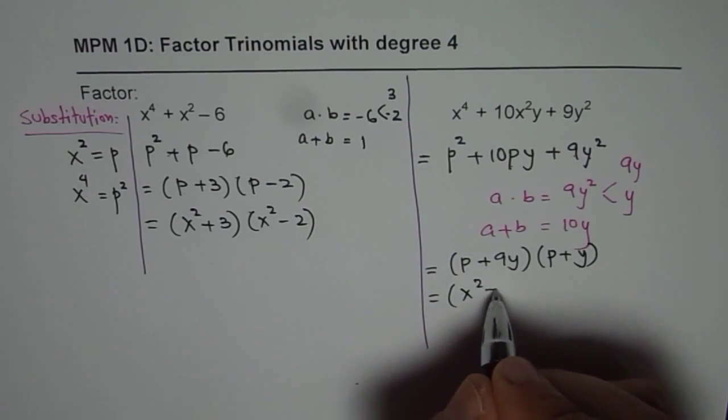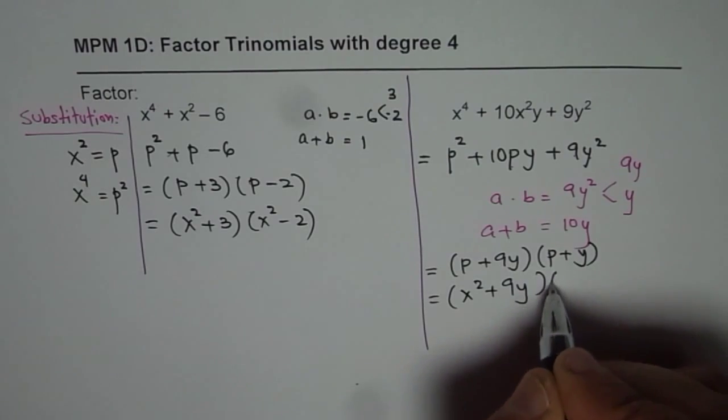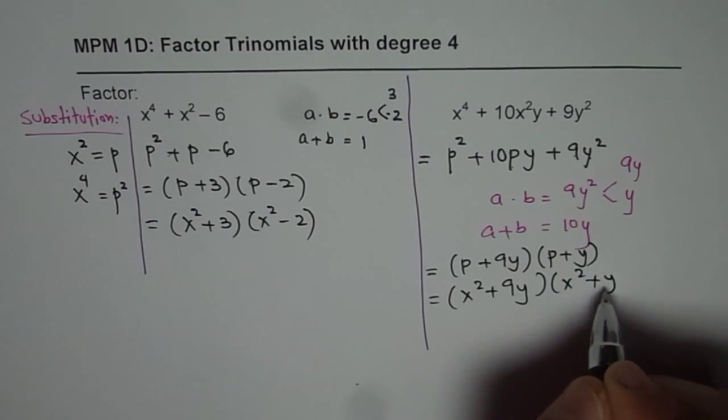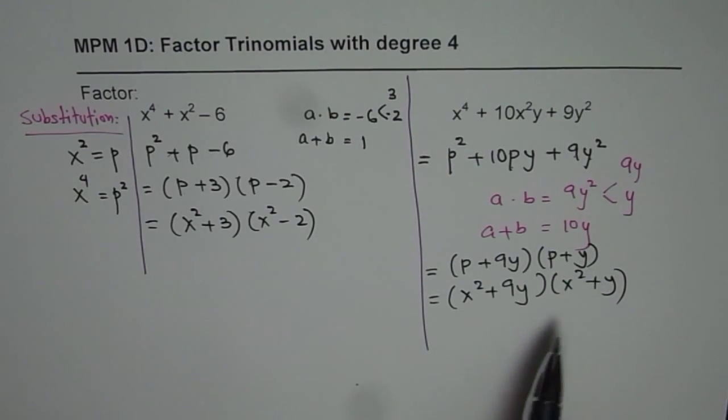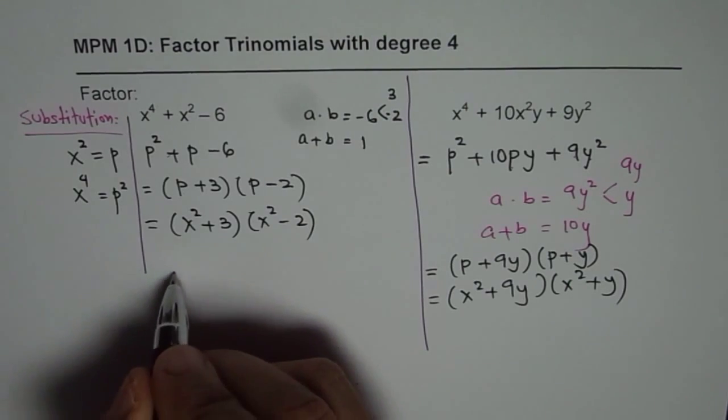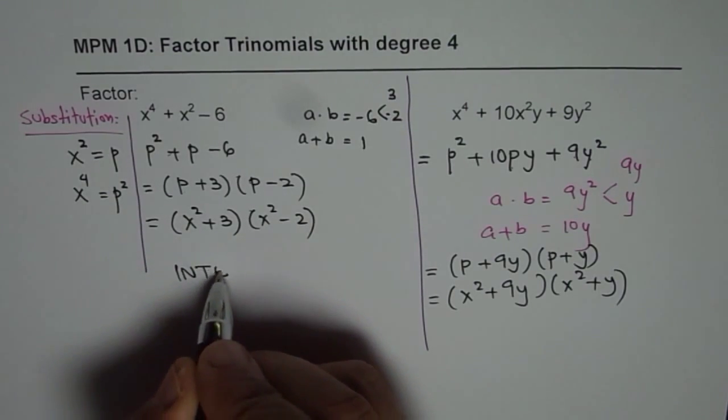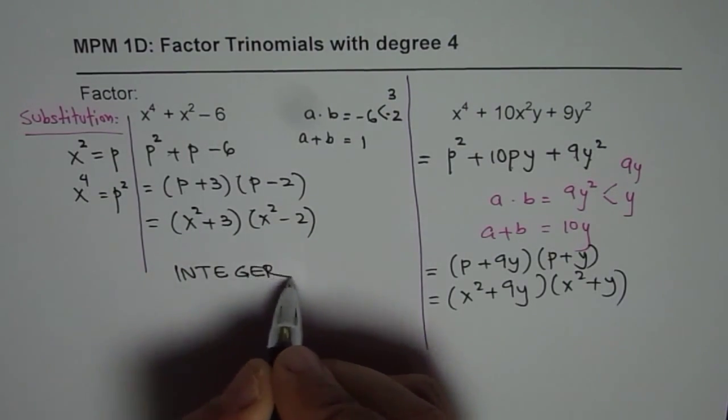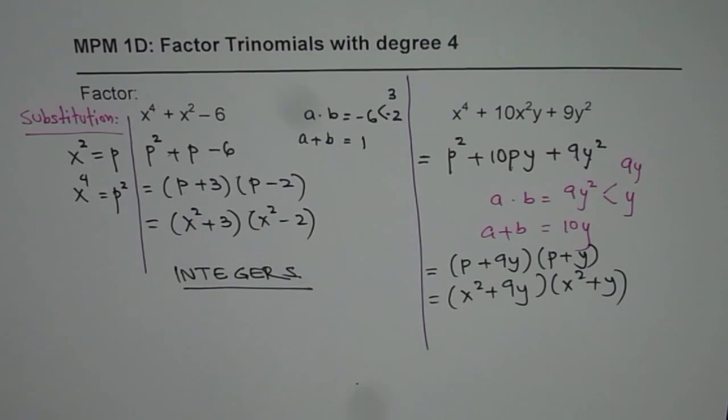So we get (x² + 9y)(x² + y). In the domain of integers, remember, in the domain of integers we are working on, this is how we factor.